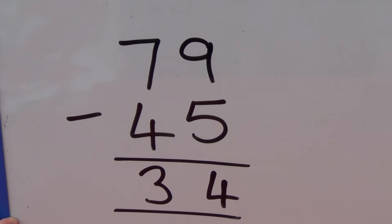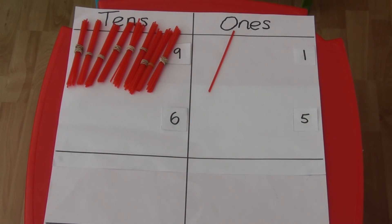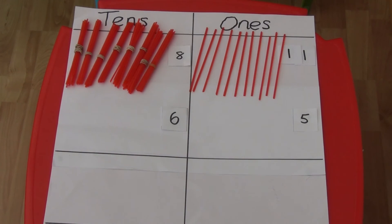For 91 we have 9 tens and 1 one and I've stuck 6 and 5 beneath to show 65 which is 6 tens and 5 ones. This time we need to subtract 5 ones but we only have 1 one so we have to exchange a 10 for 10 ones. We now have 8 tens and 11 ones.